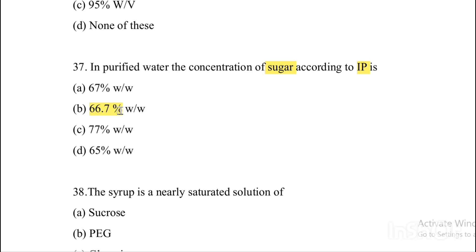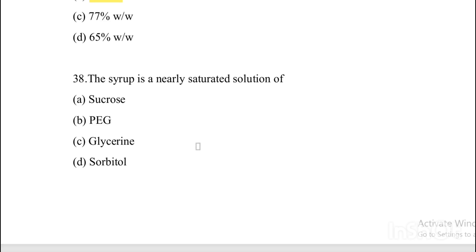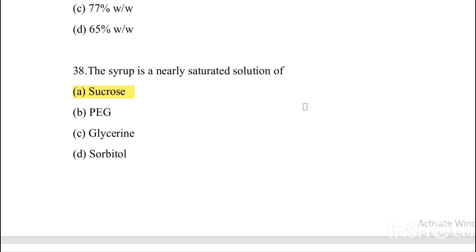Next question. The syrup is a nearly saturated solution of — Option A: Sucrose. Option B: PEG. Option C: Glycerin. Option D: Sorbitol. Answer is Option A, sucrose.